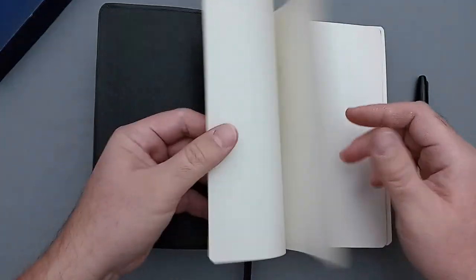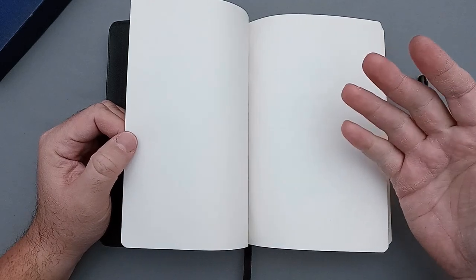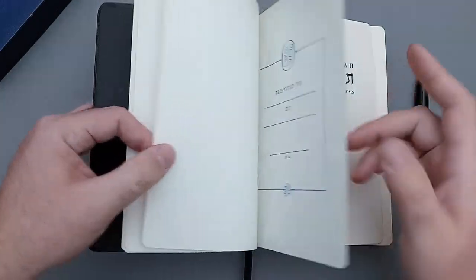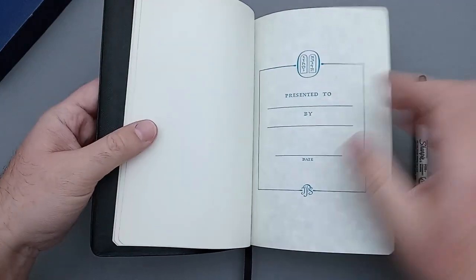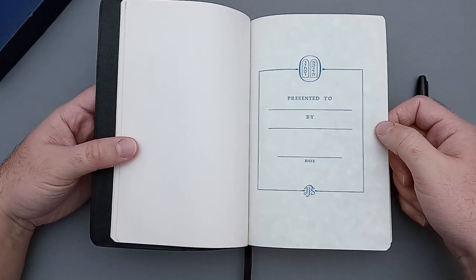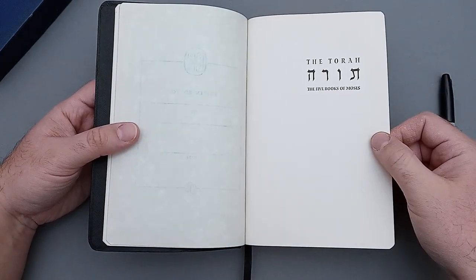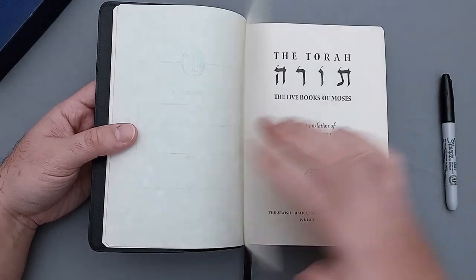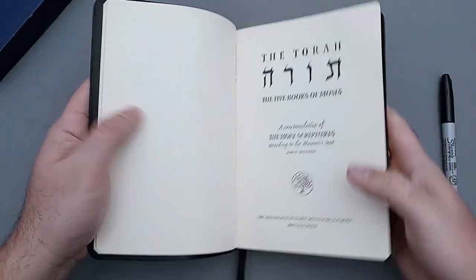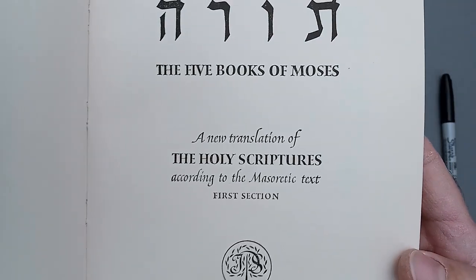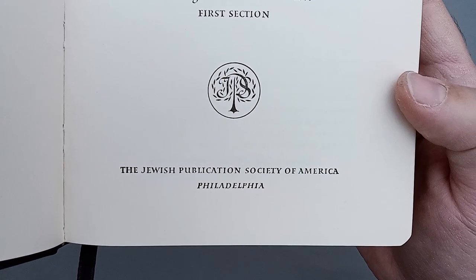So let's go ahead and get into it. We have a very thick paper. I don't know if you guys remember the Thomas Nelson 196 with that super incredible beautiful thick paper, this is its rival as far as the Old Testament is concerned. A couple blank sheets there, then you have your presentation page, presented to, by, and date, the JPS logo on the bottom. Then you have The Torah, the five books of Moses. You have your title page, The Torah, a new translation of the Holy Scriptures according to the Masoretic text, first section.